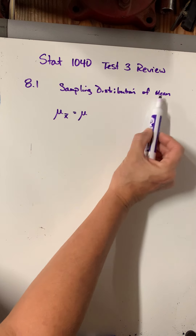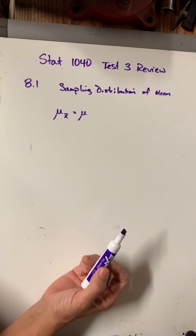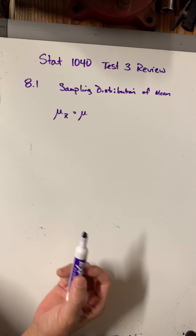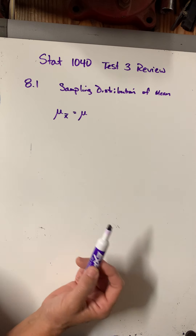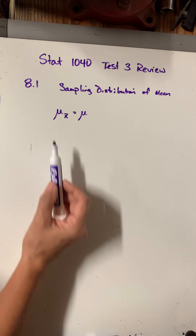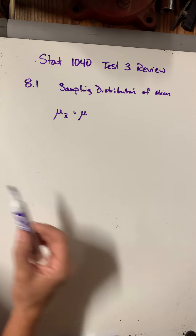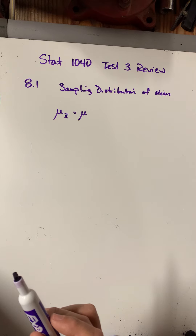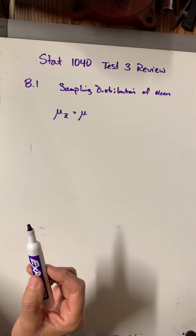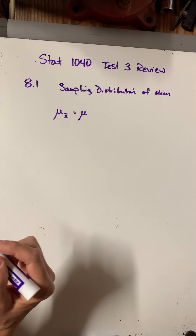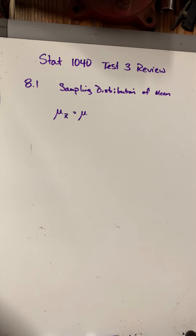When we combine the mean of the population with the mean of the sample, that's when we get into the idea of a sampling distribution. Remember that a single sample is just a sample — for example, you look at how many Skittles are in a sample of 10 bags. But a sampling distribution means you take lots and lots of samples and then average the means of all those samples.